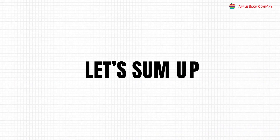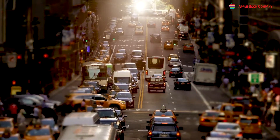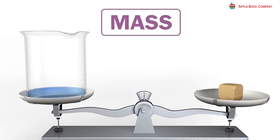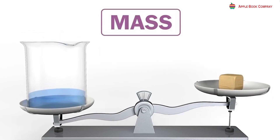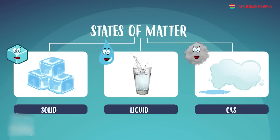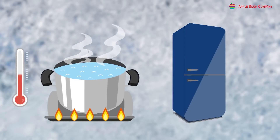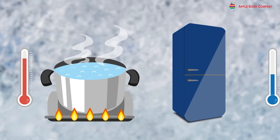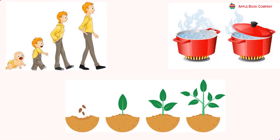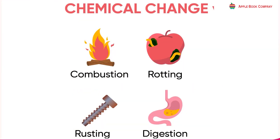Let's sum up. Things around us are made of matter. The mass of a thing is measured by its weight. In nature, matter exists in three different states: solid, liquid, and gas. The states of matter can be changed when the matter is heated or cooled. There are two types of changes around us: physical change and chemical change.